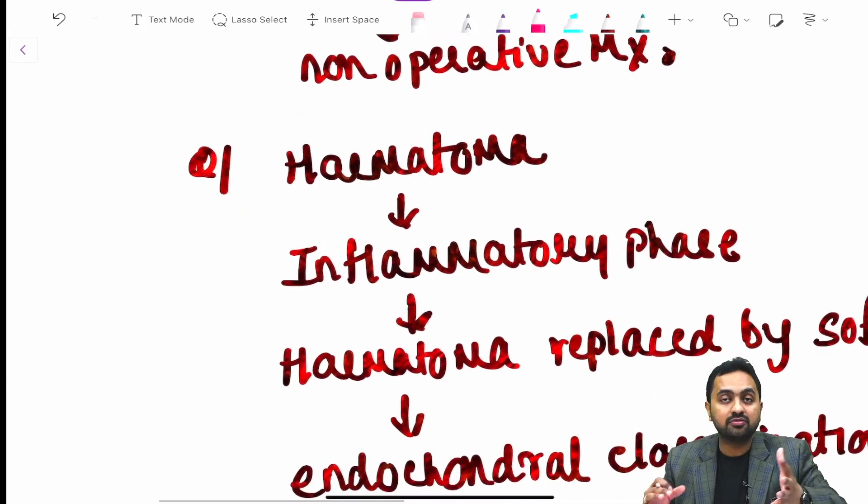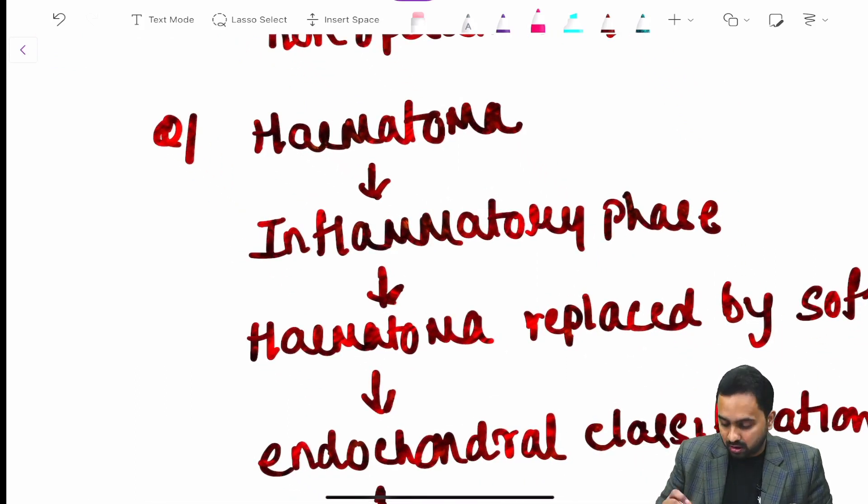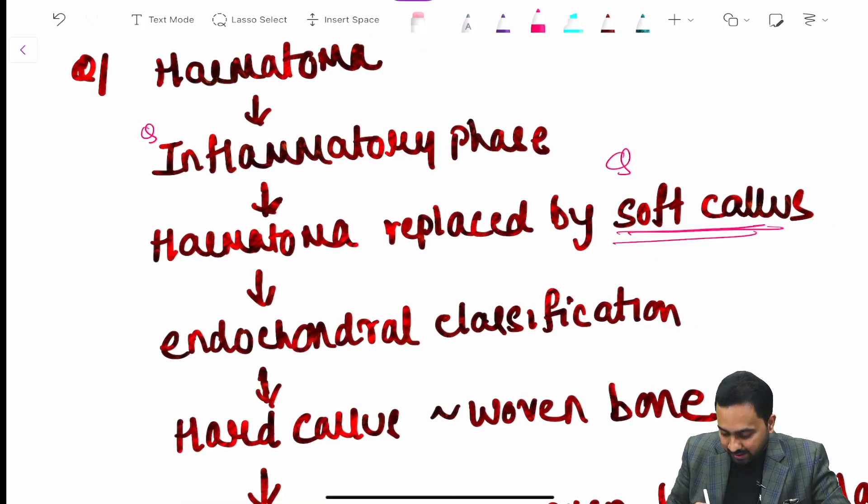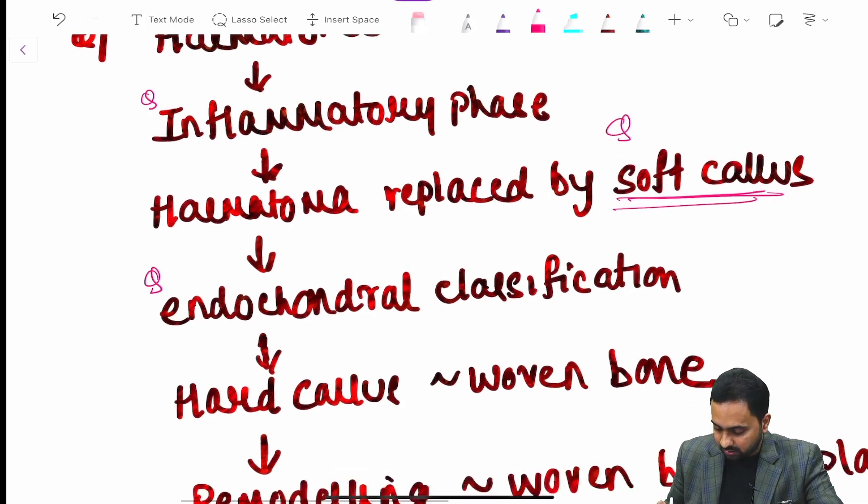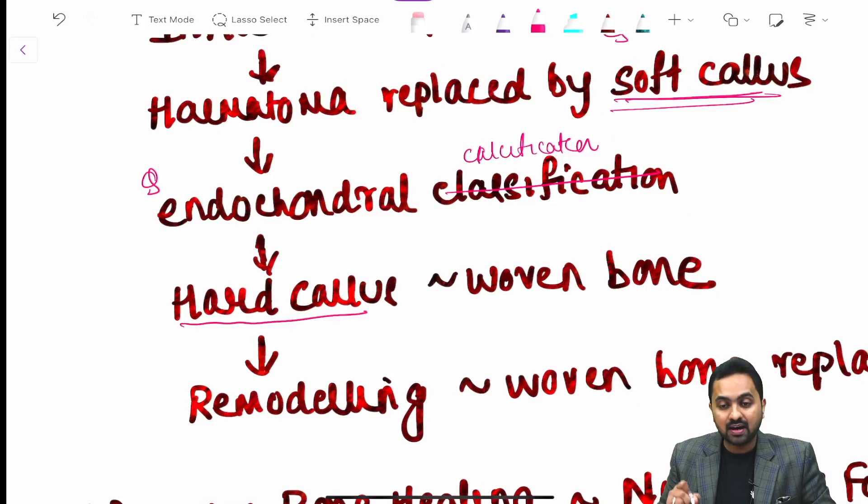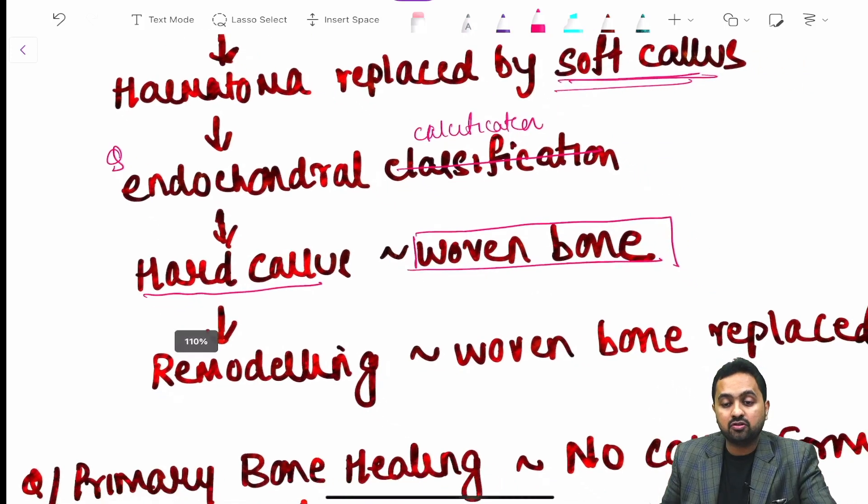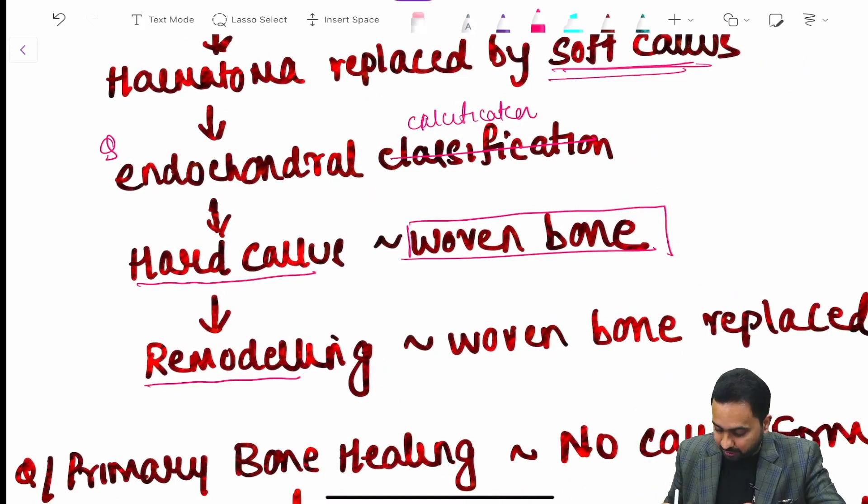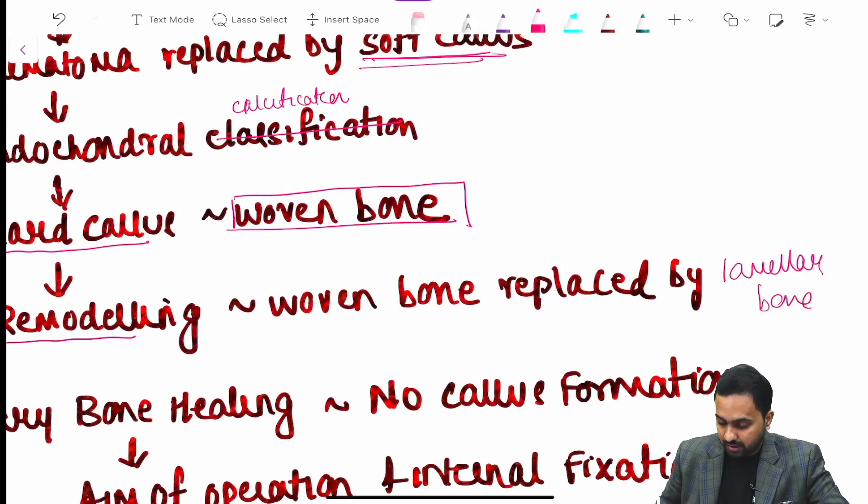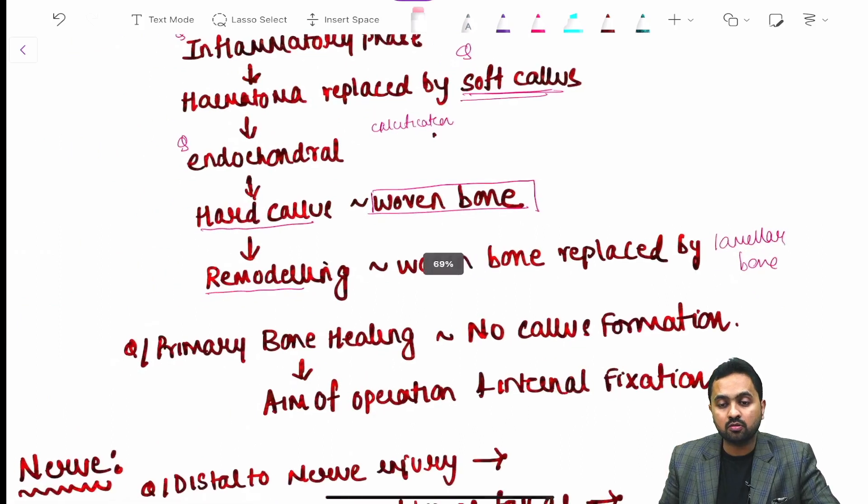We have a hematoma. What are the phases in your bone healing? We have a hematoma then we have a phase of inflammation followed by your hematoma being replaced by your soft callus. There occurs an endochondral calcification which causes the formation of your hard callus. This hard callus is your woven bone and eventually the last phase is your remodeling where your woven bone is being replaced by your lamellar bone. These are your phases of your wound healing.